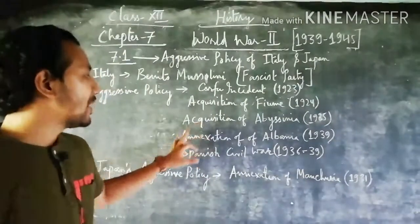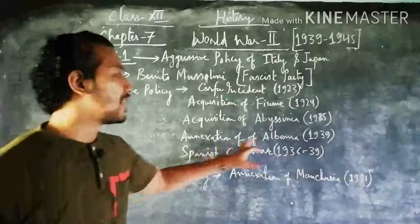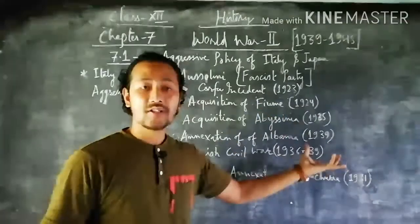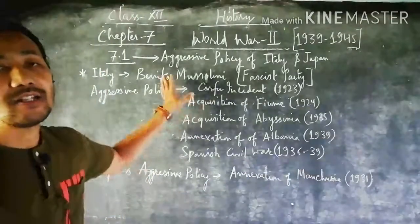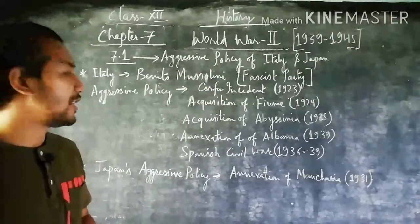Next we talk about the annexation of Albania in the year 1939. Albania was annexed and captured by Italy under the leadership of Benito Mussolini.